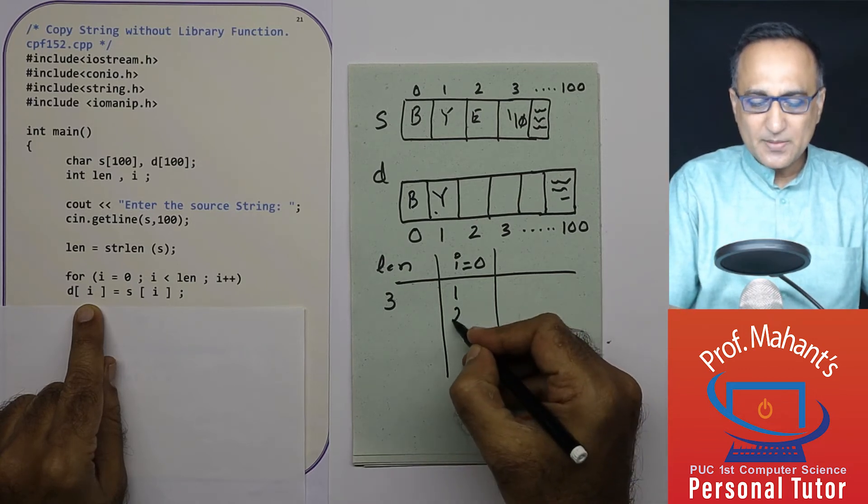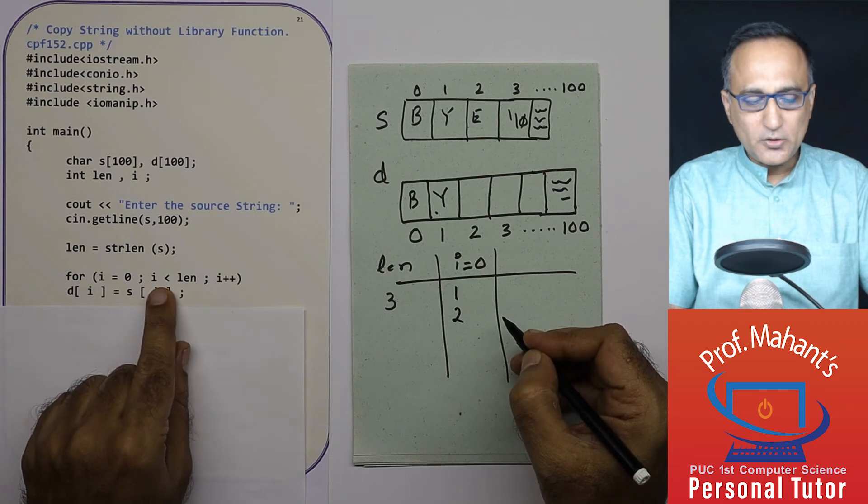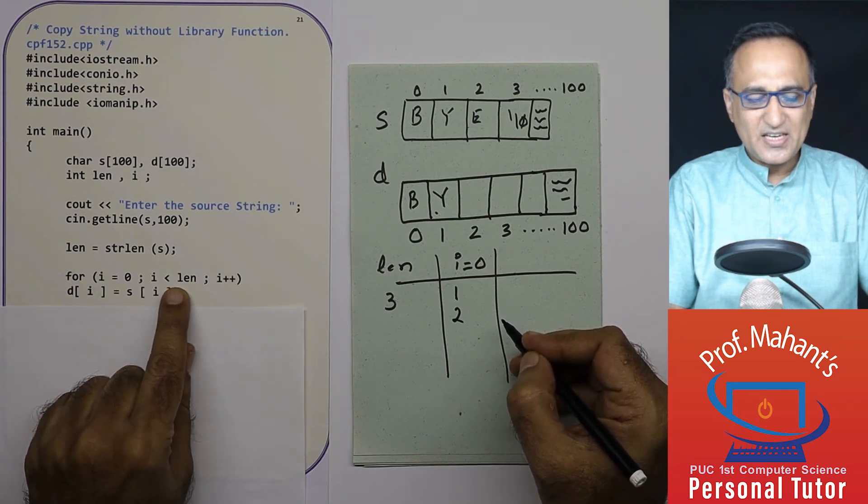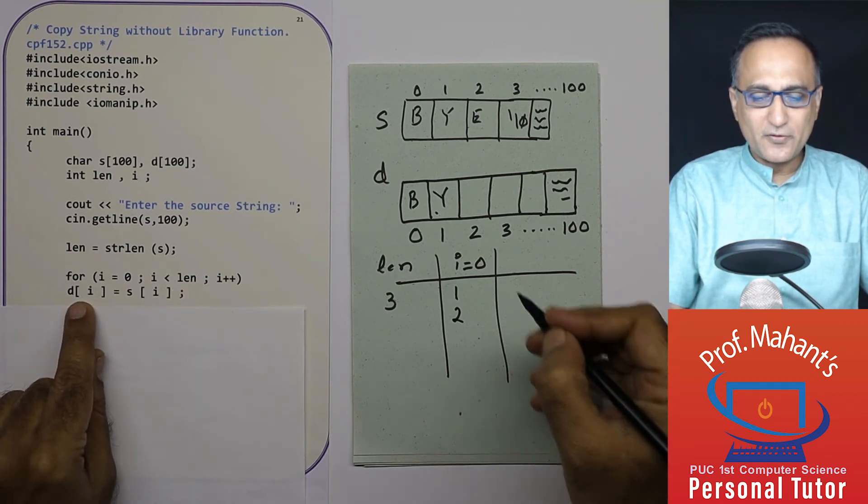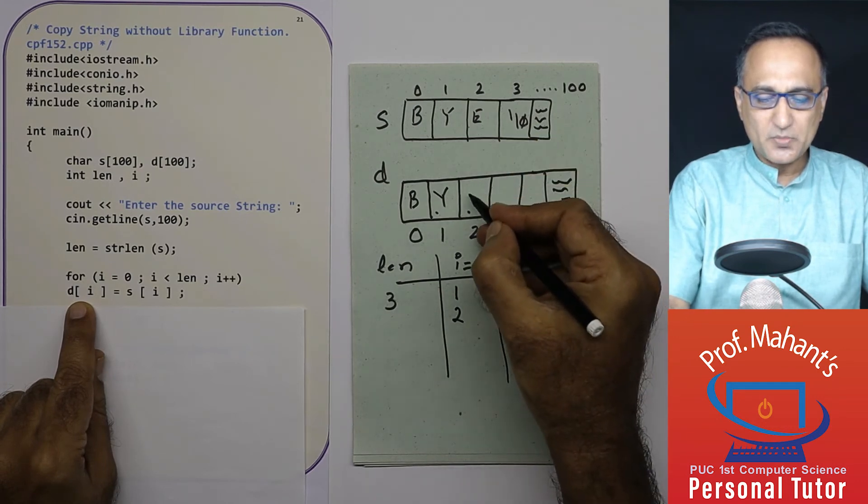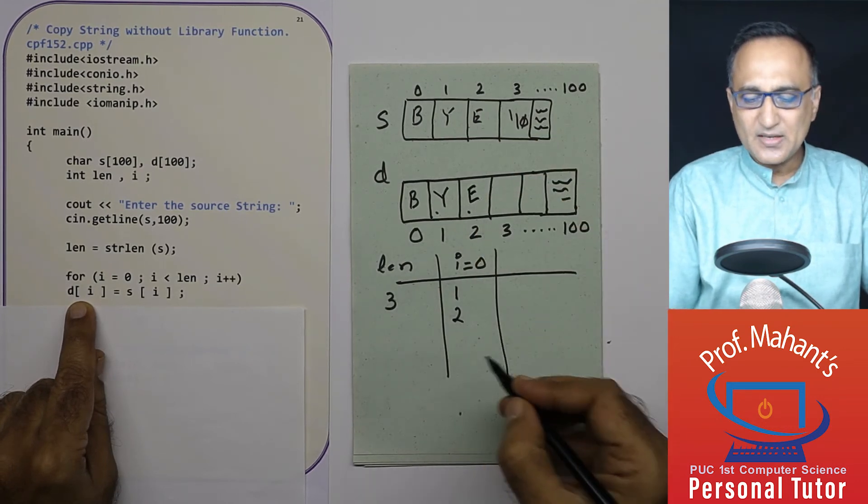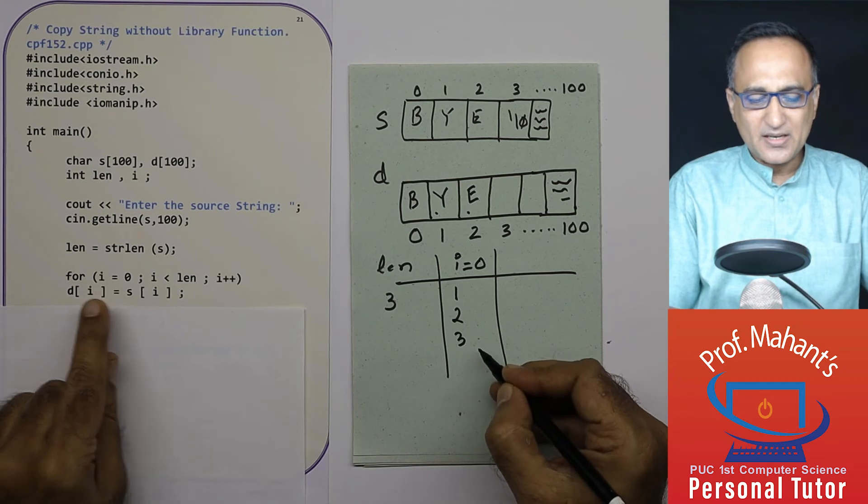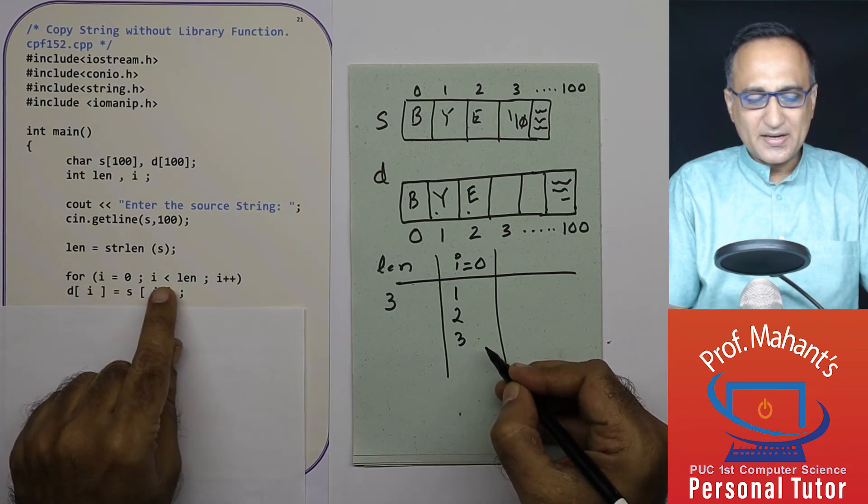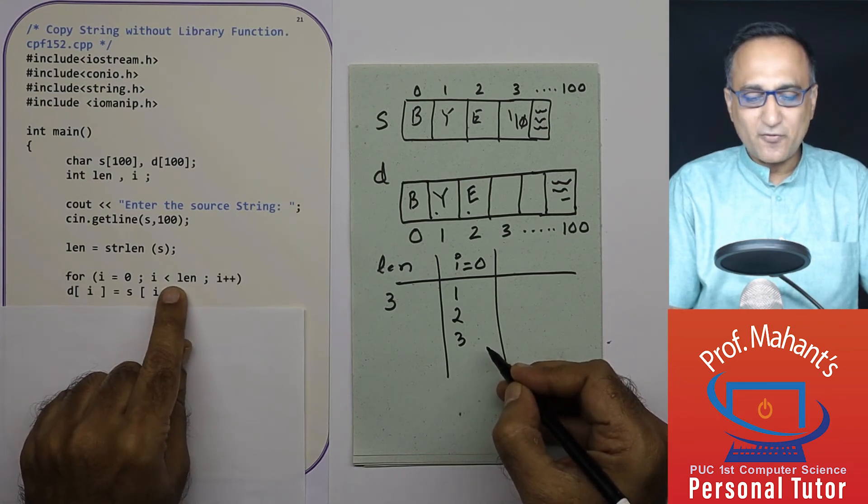Then i ends up becoming two. Two is less than three, true. So d of two happens to be this fellow. S of two happens to be this fellow. This is E. Then i ends up becoming three. After this increment, is three less than three? It is false.